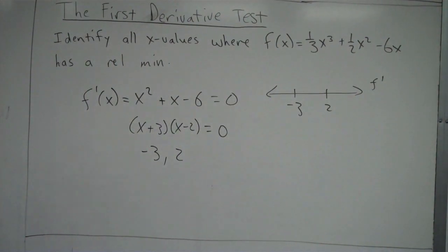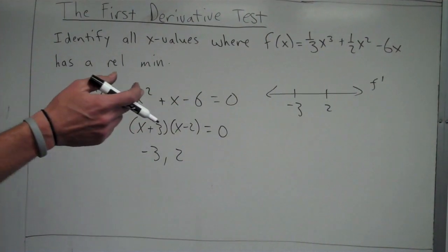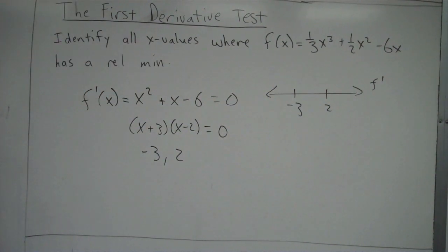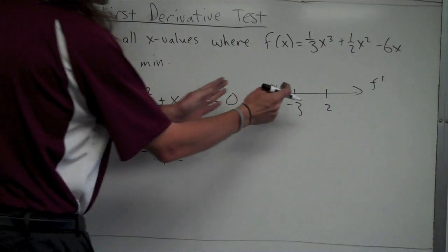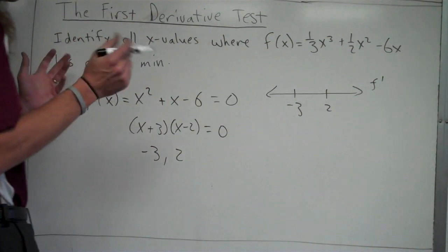And again, the idea with the sign chart is, since we know those are the only values where f prime equals zero, those are the only places where the value of f prime can switch from positive to negative or negative to positive. So, now we do need to test values in those intervals back in f prime to see whether f prime is positive or negative.